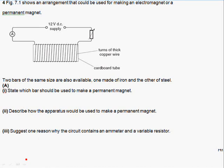Figure 7.1 shows an arrangement that could be used for making an electromagnet or a permanent magnet. Two bars of the same size are also available, one made from iron and one made from steel. State which bar should be used to make a permanent magnet.